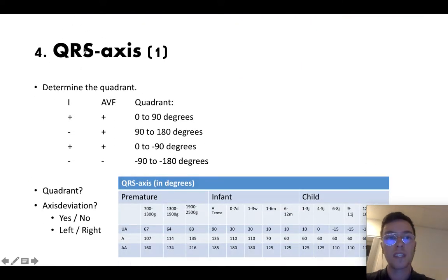Step four, you should look at the QRS axis. So first you need to determine the quadrant. Look in lead I and lead AVF and see if it's positive or negative. And then the combination of those two will tell you the quadrant. So you know which quadrant this is and then you can look in this table. Are you looking to an ECG of an infant or a child?